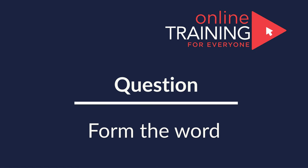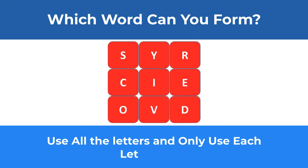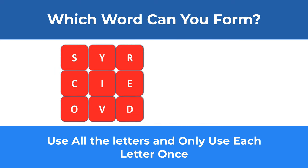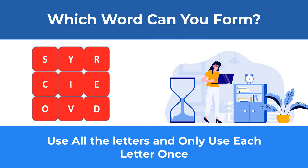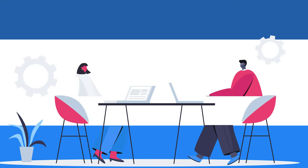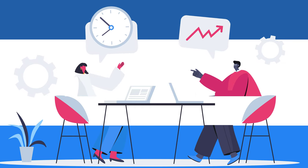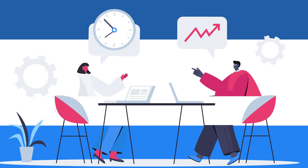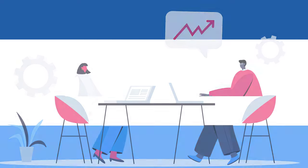Here's an interesting question where you need to form a word using all the letters — and only each letter once. You're presented with nine letters: S, Y, R, C, I, E, O, V, D. Give yourself 10 to 20 seconds — this is typically as much time as you get on the real test. My version may not be the only one, so if you see other possible options, please share them in comments.